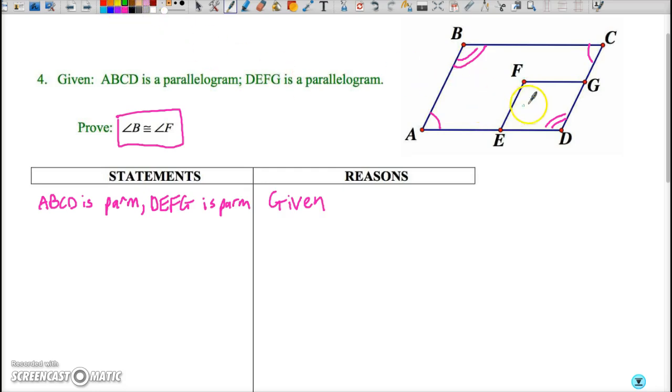Similarly, if we look at a parallelogram EFDG, we know that E is congruent to G and we know that F is congruent to D and what we can already see...